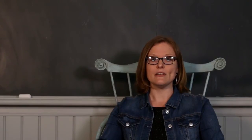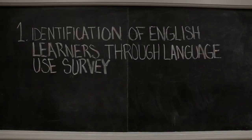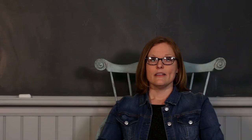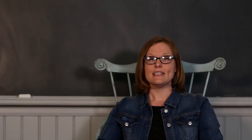The process involves two steps: identification of potential English learners through the Language Use Survey and English Language Proficiency Screening. The purpose of this brief video is to provide an overview of the identification process and ensure that the Language Use Survey is administered correctly. We will now walk you through a few different scenarios you may encounter when administering the Language Use Survey.